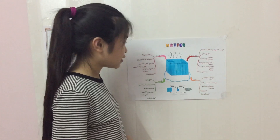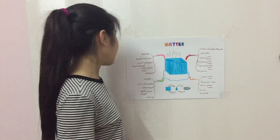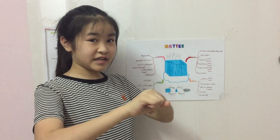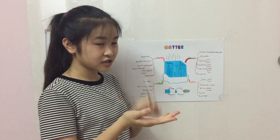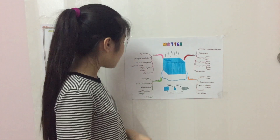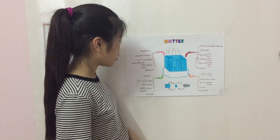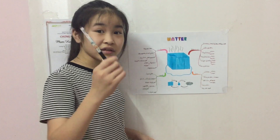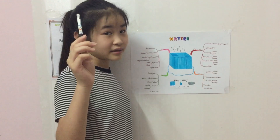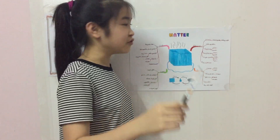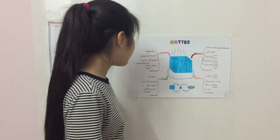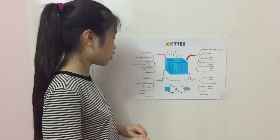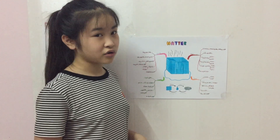Then there's solid. A solid keeps its own shape — like this pen. It cannot have a different shape; it's just a pen. Solids do not flow at a given temperature; they do not move. They are made of particles that are really close together and hold on to each other with a strong force.